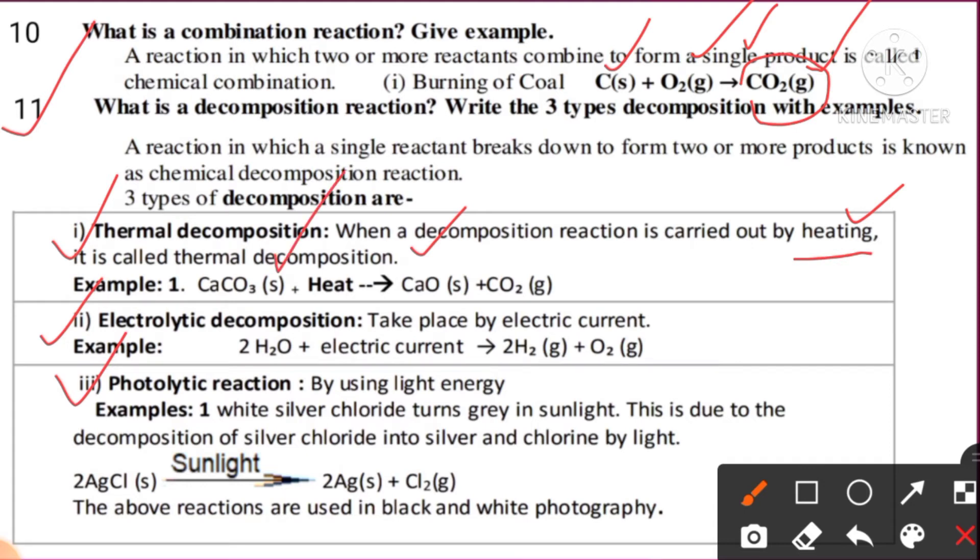Example: calcium carbonate solid is heated in presence of heat. It gives calcium oxide and carbon dioxide gas. So a single product, calcium carbonate, on heating gives two or more products: calcium oxide and carbon dioxide gas. A single reactant gives two or more products.